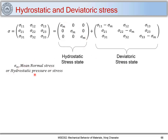Here, sigma m is called the mean normal stress, or hydrostatic pressure. The value of sigma m is (sigma_11 + sigma_22 + sigma_33) / 3, or in terms of principal stresses it is (sigma_1 + sigma_2 + sigma_3) / 3. So we have seen what hydrostatic pressure is earlier in our classes.